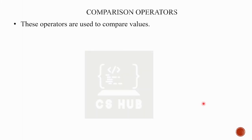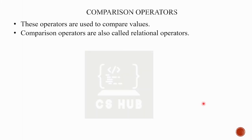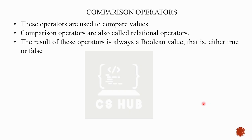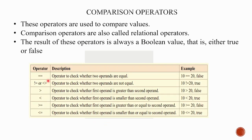Comparison operators compare two values - they are relational operators. The result is always true or false. We have equal to (==), and we check 10 == 20, which is false. Then not equal to, less than, greater than, less than or equal to, and greater than or equal to. These are very familiar.